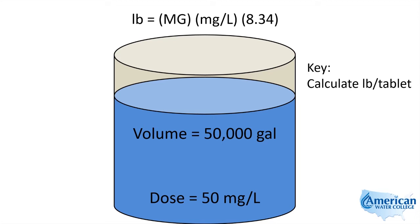Because what they'll do is they'll tell you: you added so many tablets to a certain volume and got a certain dose — how many of those do you need to get a certain dose in this other tank? So what we want to do is calculate how many pounds per tablet added, and then we can just use a ratio to solve the second part of the problem. So let's take a look at how this problem might read.